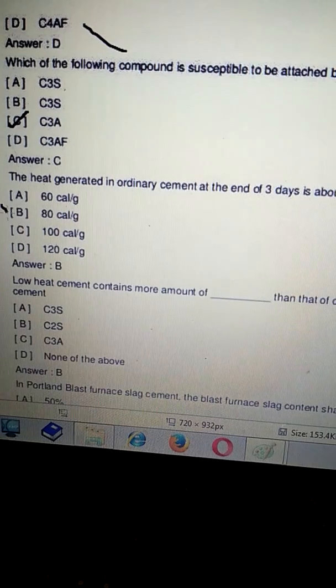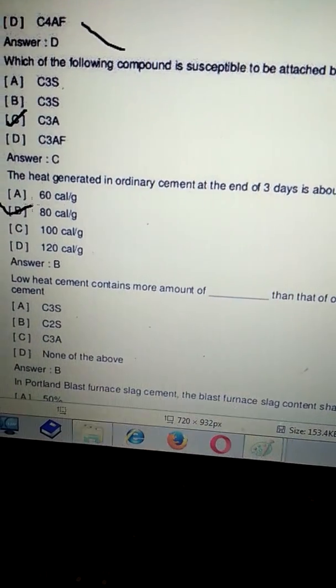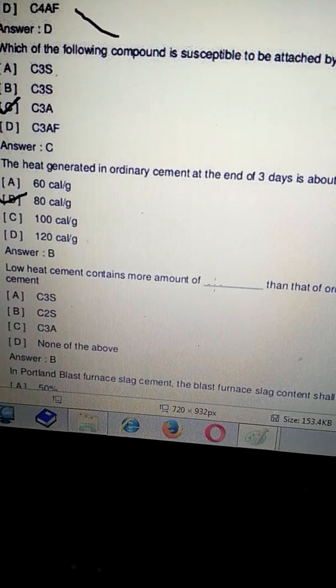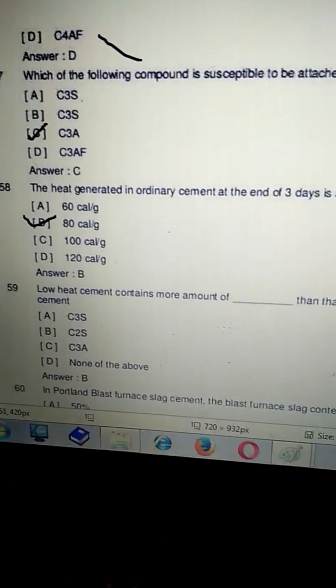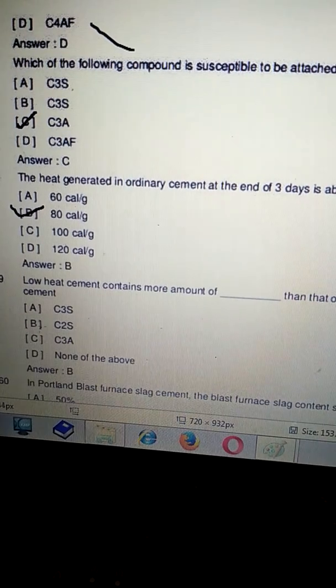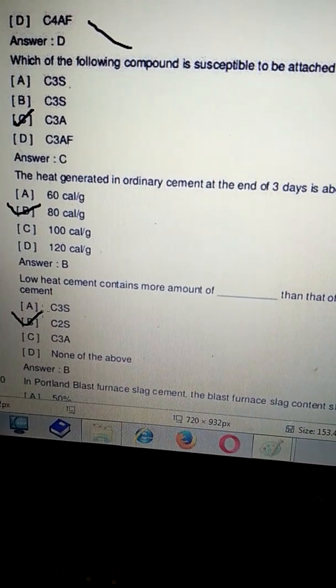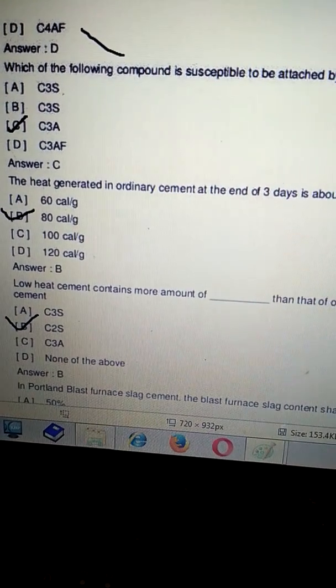Next question: low heat cement contains more amount of blank than that of ordinary portland cement. The correct answer of this question is dicalcium silica. The correct answer of this question will be B.